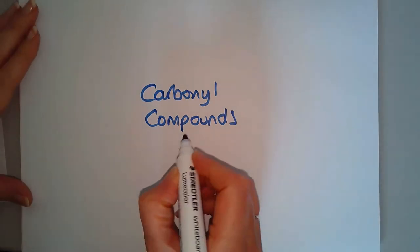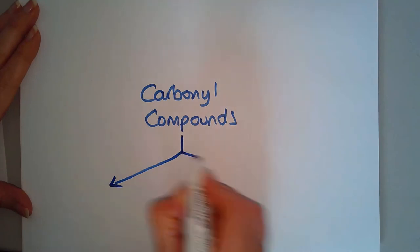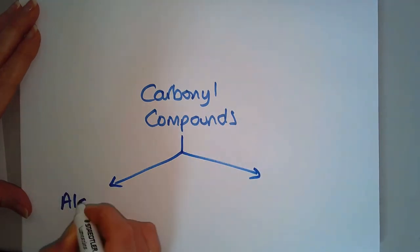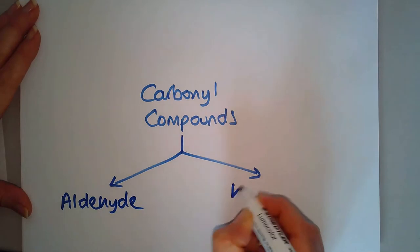There are only two different types of carbonyl compounds: aldehydes and ketones.